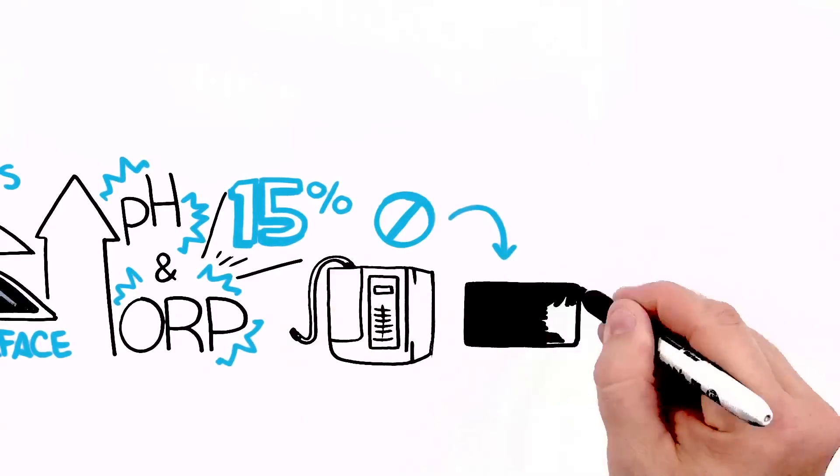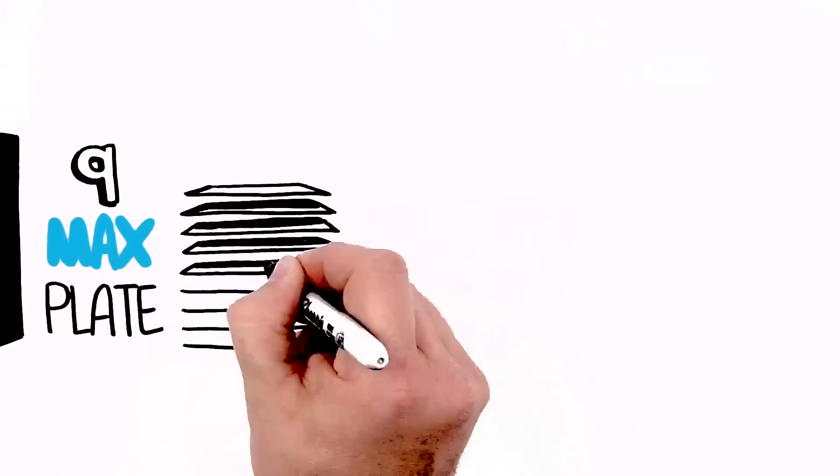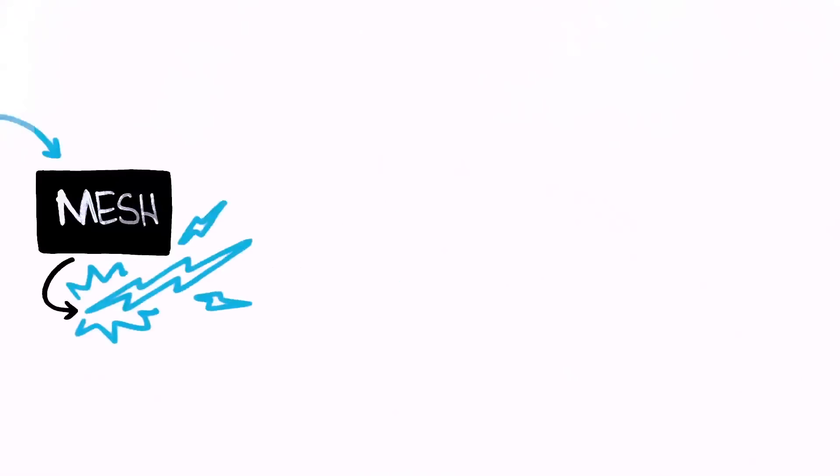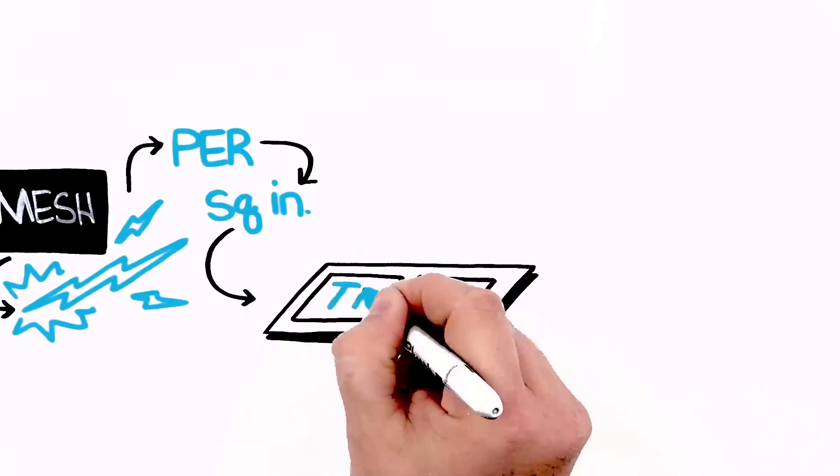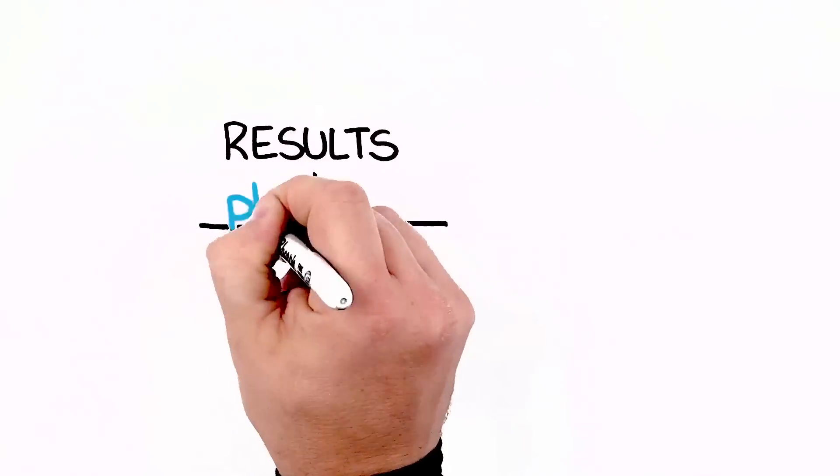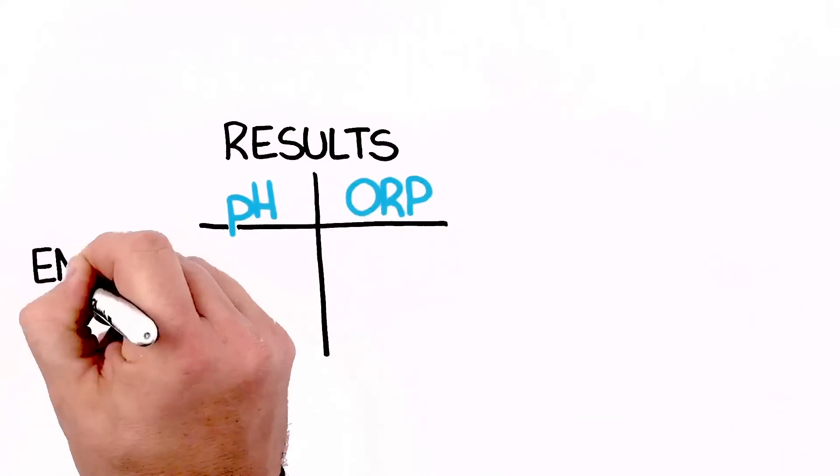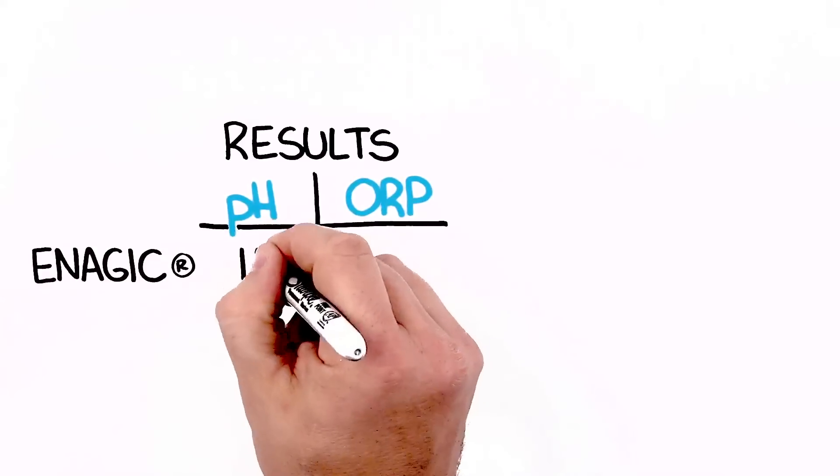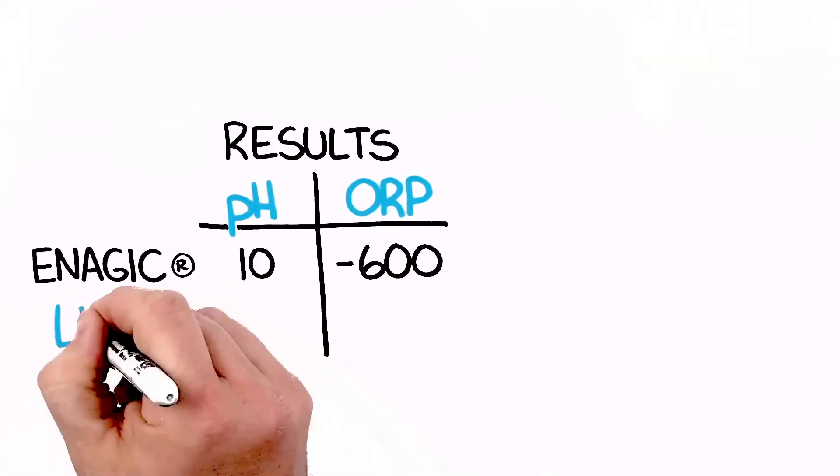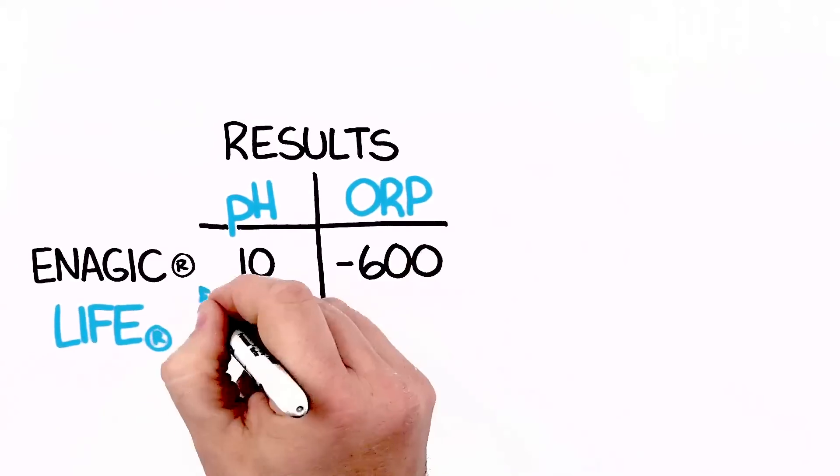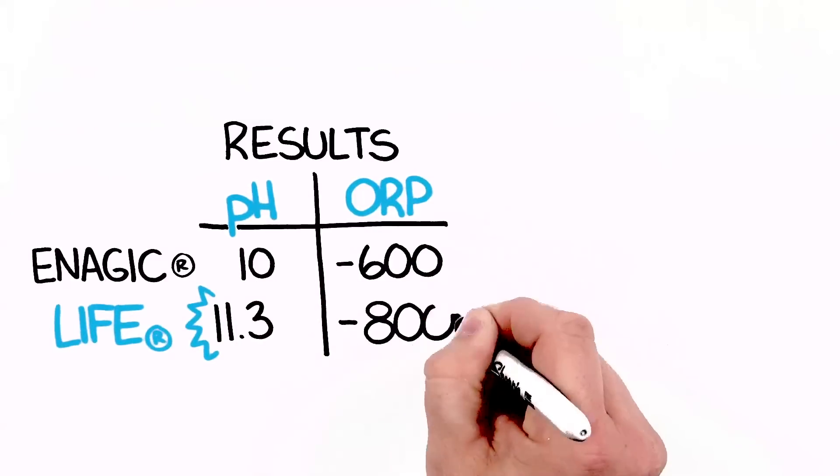Kangen does not offer mesh plates. The Life M9 has nine max large power plates, along with mesh, and delivers more power per square inch than any other electrode on the market. And the results can be seen with the pH and ORP output. Enagic weighs in with a 10 pH and negative 600 ORP. Life steps up with 11.3 pH and negative 800 ORP.